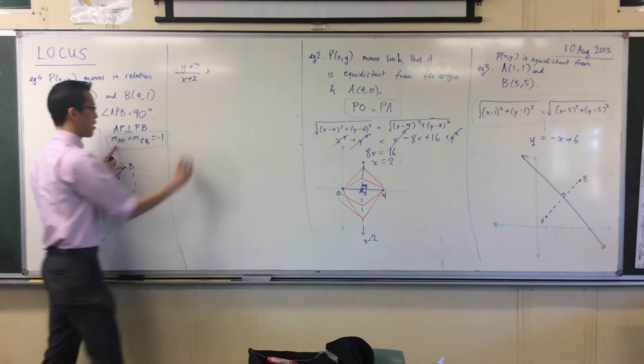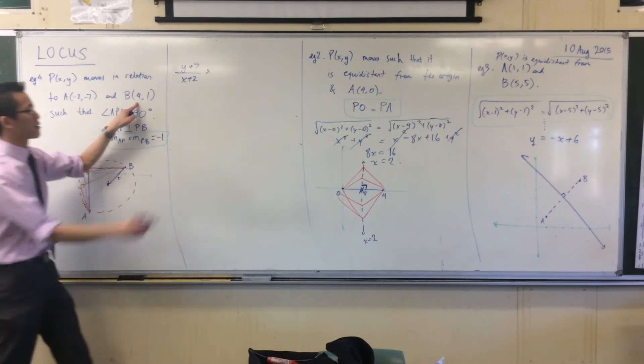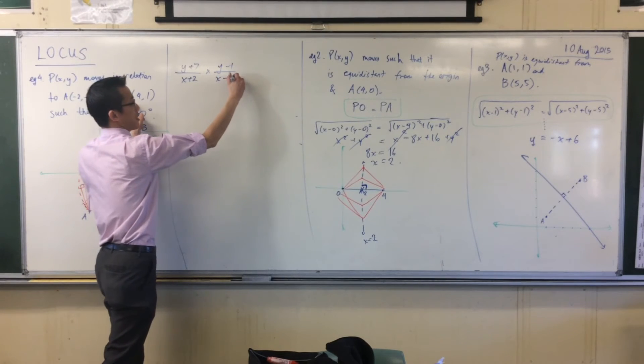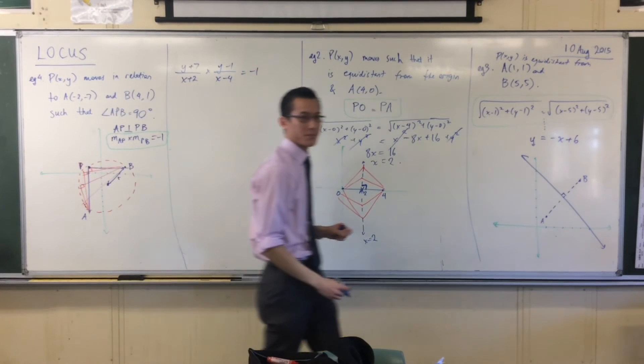What's the gradient of PB? It's going to be y minus 1, or y minus minus 1. Very good, and that's negative 1.